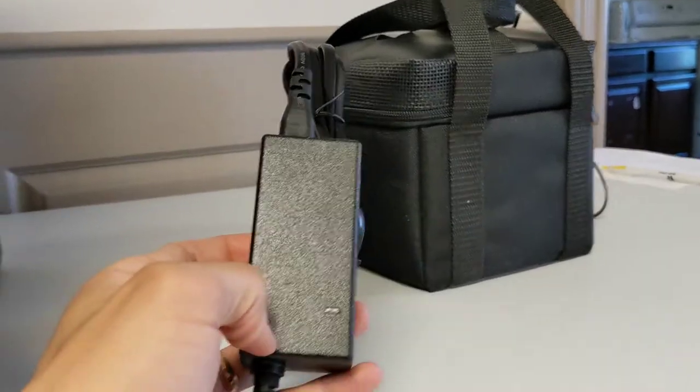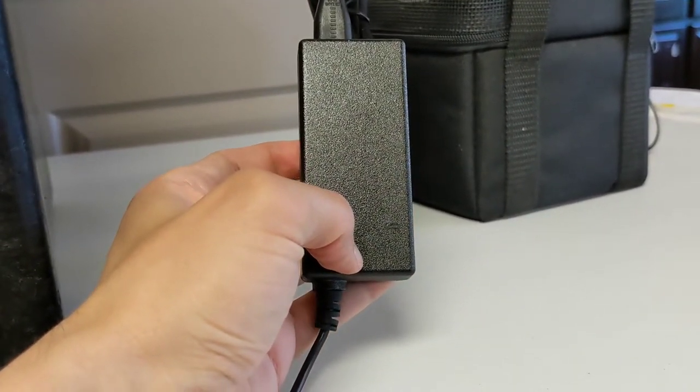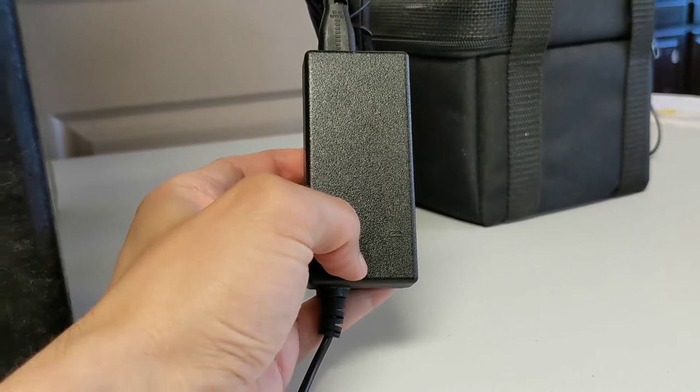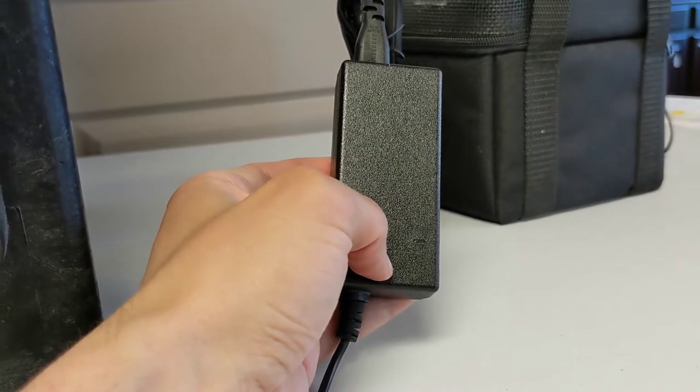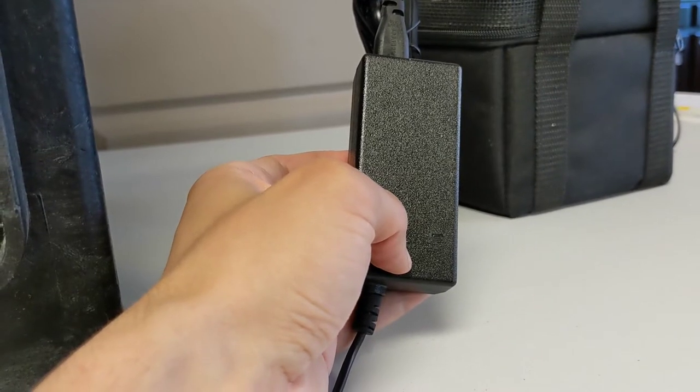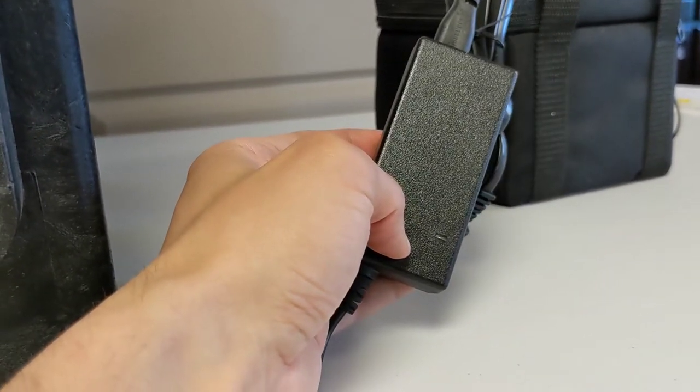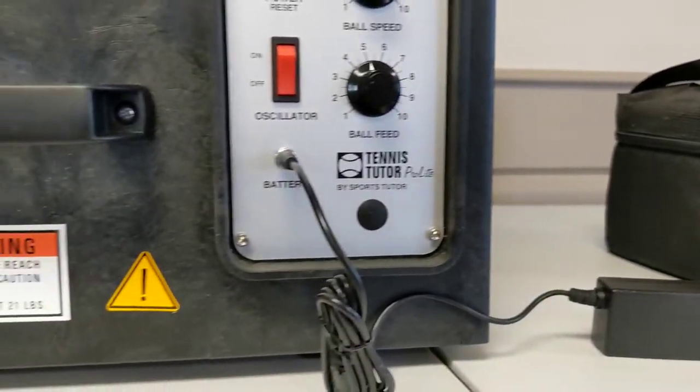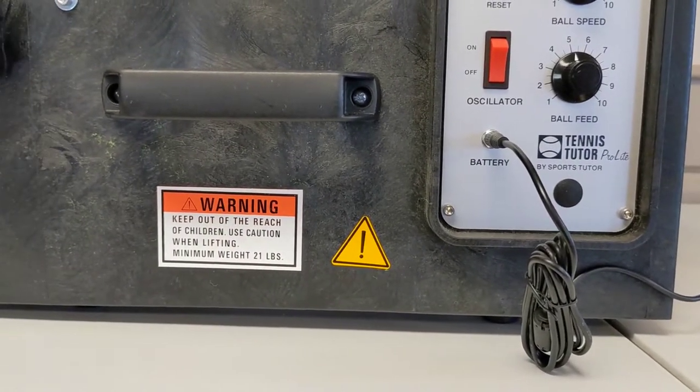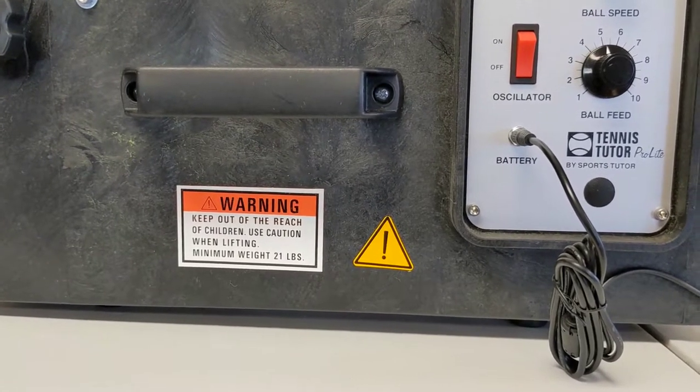A light on the adapter will indicate that it is charging and it will change colors once the unit is fully charged. This includes a smart charger, so it will not overcharge the battery, and you should charge the Tennis Tutor ProLite after every use.